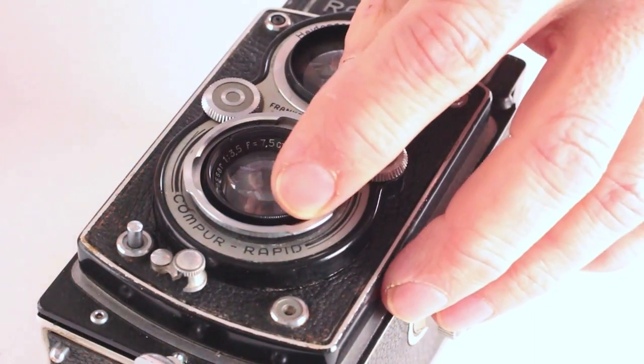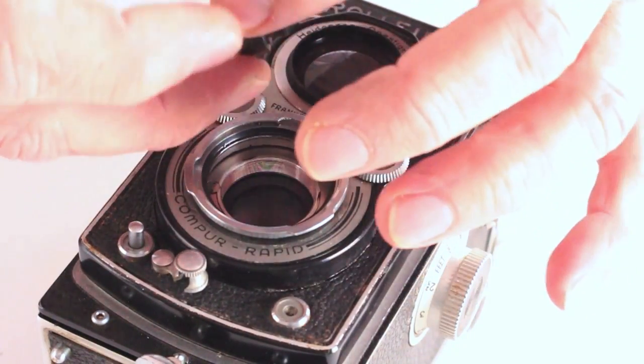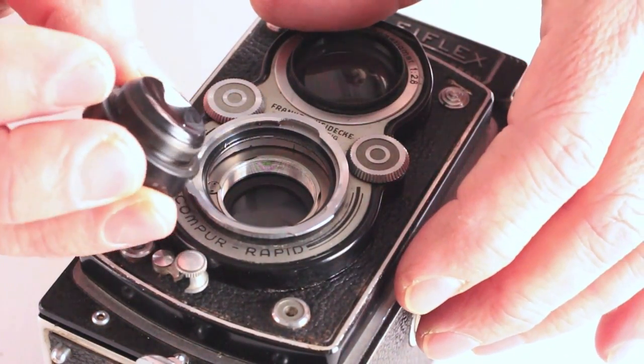Be sure to use a slotted spanner in which the bits closely match the slots of the lens. Complete the removal process and set the lens group aside.